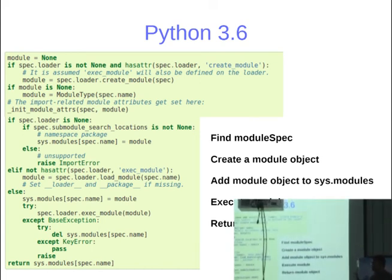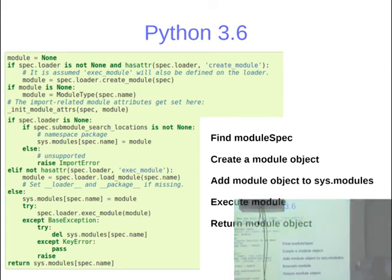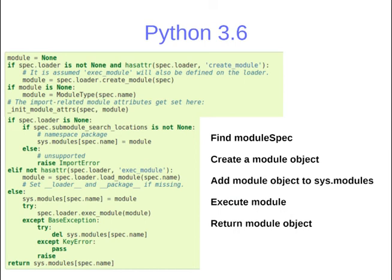In Python 3.6, instead of finding a loader directly, it first finds a module spec. Once you have the module spec, you create a module object from it, add the module object to sys.modules, execute the module, and return the module object. Caching in sys.modules also solves the problem of circular imports — as soon as a module is being processed, it's added to sys.modules early, so if another module tries to import it again circularly, it finds it already there and stops.